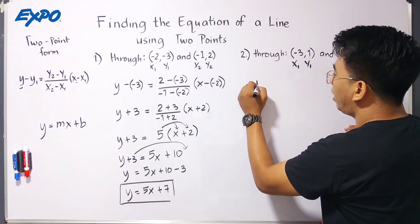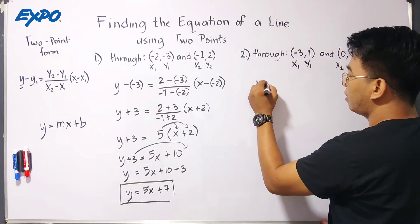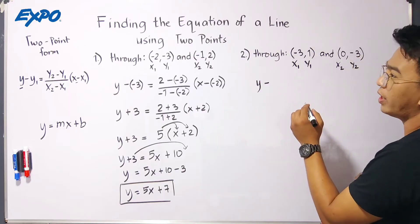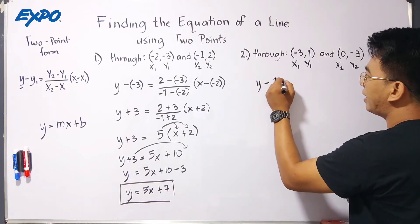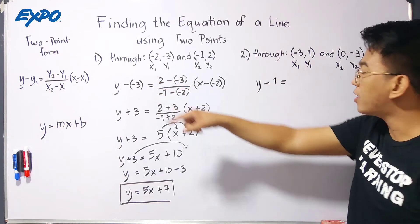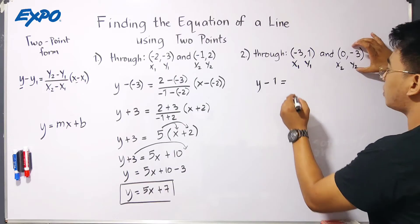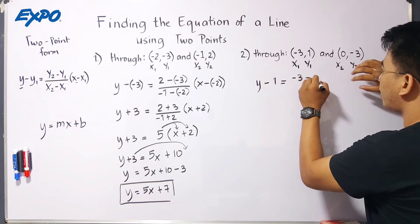What we have here is this. y, copy your variable y. We'll work with y first. We have y minus your y sub 1, which is equal to 1. So, y minus 1. Is equal to, there we go. We have there, y sub 2 minus y sub 1. Your y sub 2 is negative 3. Minus your y sub 1, which is 1.